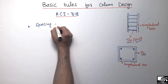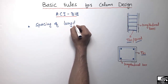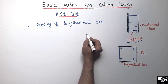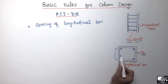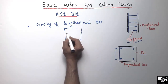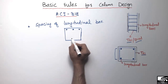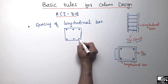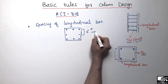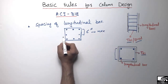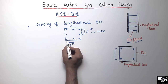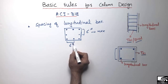The next rule for column design is the spacing of the longitudinal bar. Looking at the cross section of a rectangular or square column with the main longitudinal bars, the maximum spacing allowed between any two adjacent bars is six inches. We cannot provide spacing between two bars greater than six inches. This is the maximum spacing allowed by ACI.